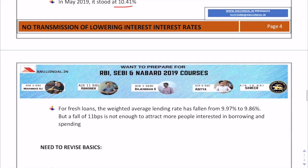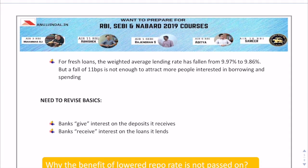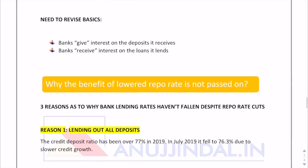For fresh loans, the lending rate has fallen by just 11 basis points, but it is not enough to attract people to take up loans from banks and increase the borrowing and spending mechanism in our country. This is the whole picture behind the fact that despite the reduction in repo rate, lending rates are not going down. So why is it so? Let's discuss the reasons.